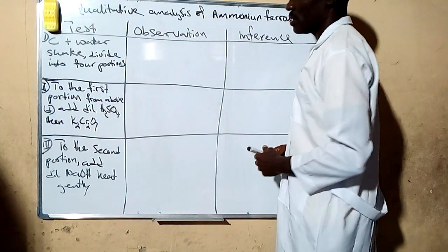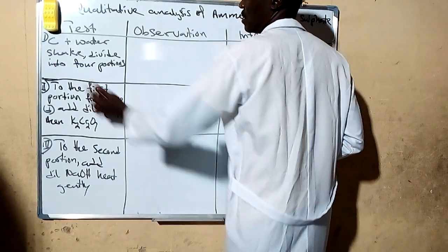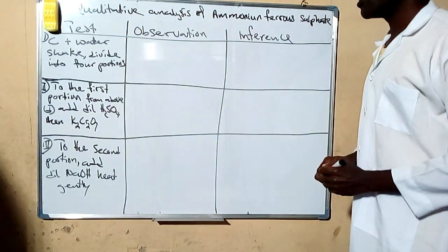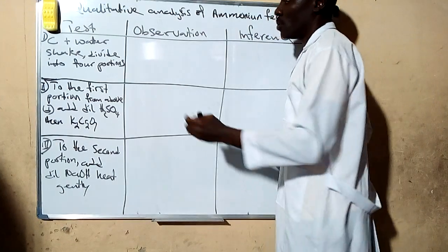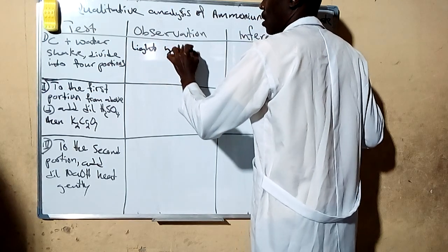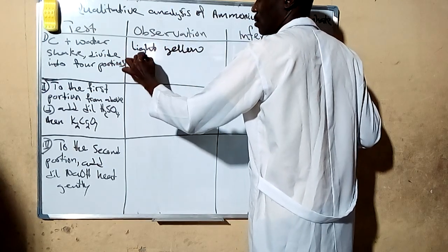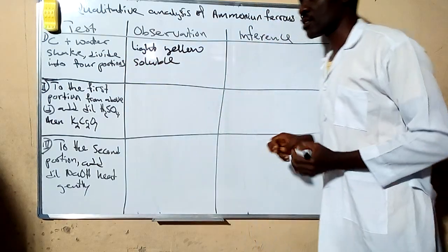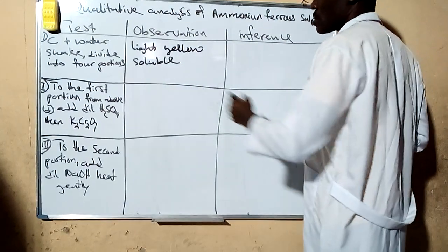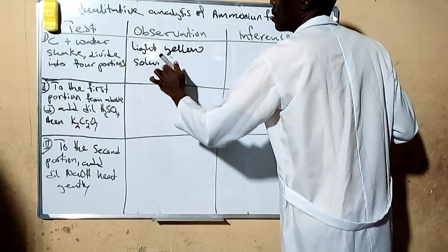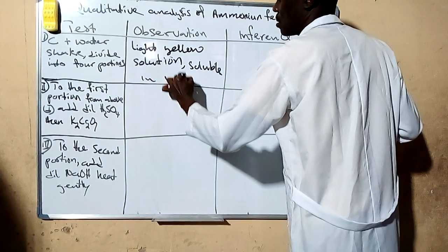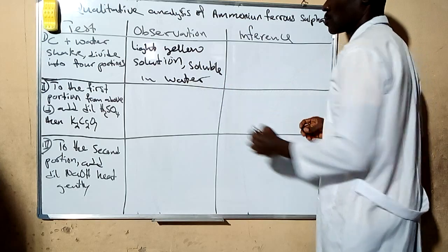So in this case, the first test here: we add C to water and shake. Then after shaking, you divide into four portions. When you add water, the observation is likely to be you notice light yellow solution, meaning that the salt is soluble in water.